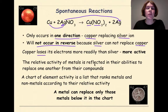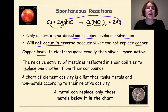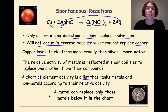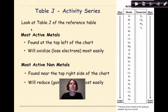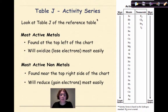The relative activity of metals is reflected in their abilities to replace one another from their compounds. A chart of element activity is a list that ranks metals and nonmetals according to their relative activity. A metal can replace only those metals below it in the chart. The chart I'm talking about is Table J, and Table J is going to determine which metals are active and which metals are not as active. Let's look at Table J, this activity series.